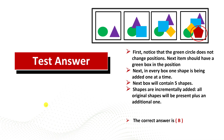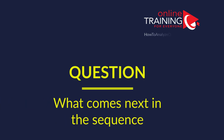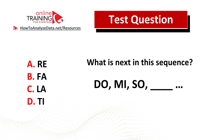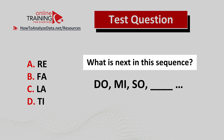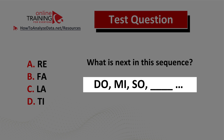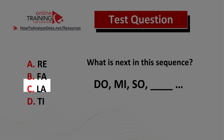Hopefully you've nailed this question and now know how to look for patterns in the test. Here is a tricky question from the real test — what comes next in this sequence? You have a sequence of items: Do, Mi, So, and then the missing item. You have four choices. Choice A: RE. Choice B: FA. Choice C: LA. And choice D: TI. Do you think you know the answer? Now might be a good time to pause this video.